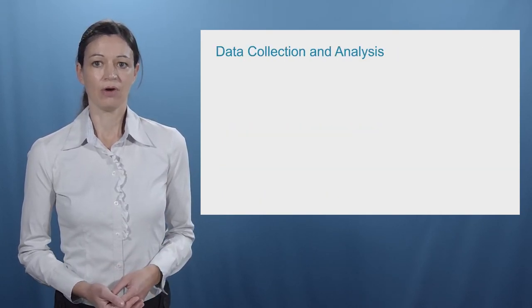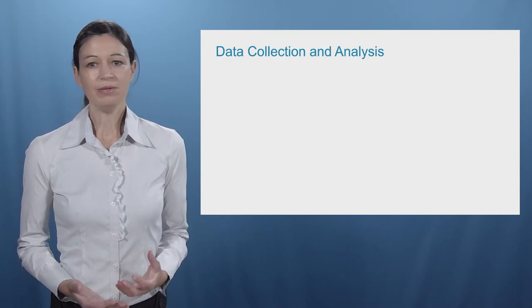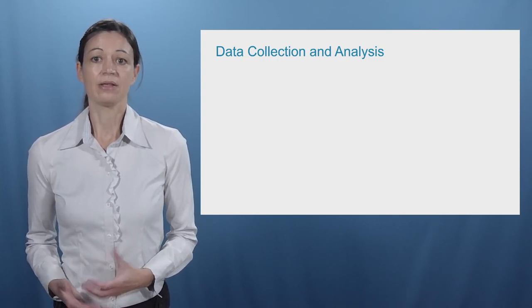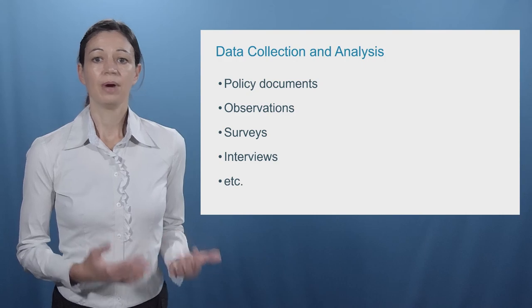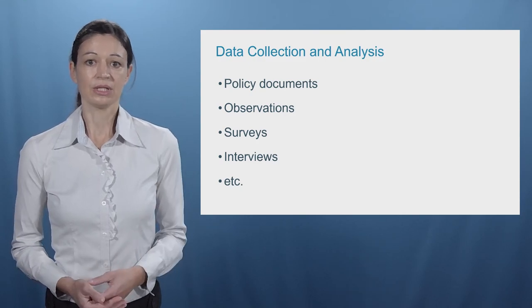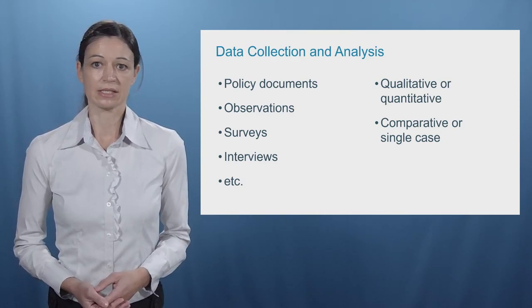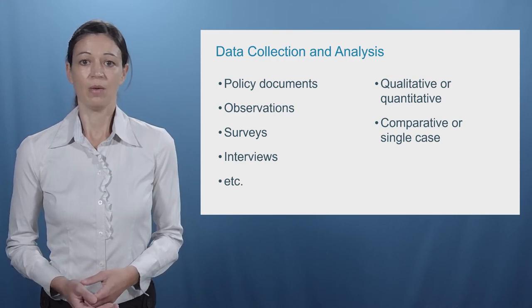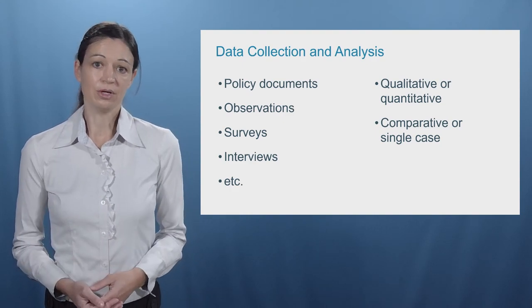There is not one method of data collection or analysis in process tracing and policy evaluation — this very much depends on the policy, your assumptions, and on the operationalization, which are essentially the observable manifestations. Data can be collected through various means, including policy documents, observations from certain facts, surveys, and interviews, but this certainly is not an exclusive list. This data can also be analyzed in multiple ways. It can include qualitative and quantitative methods, and you can evaluate a policy in one case — for example, one country — or compare a number of policies or countries.